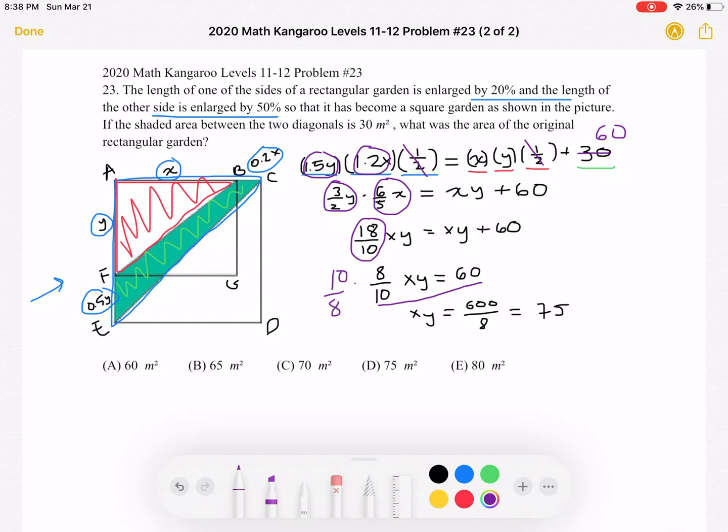Now, we're going to multiply by 10 eighths on both sides to get XY is equal to 600 over 8, and that is equal to 75. So we found what we're looking for. We were looking for XY, the area of the original rectangular garden, and we found that that is 75. That is answer choice D.